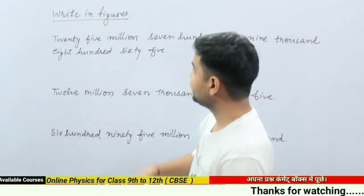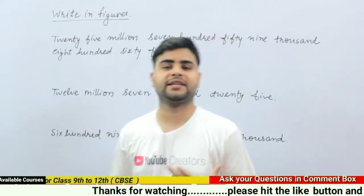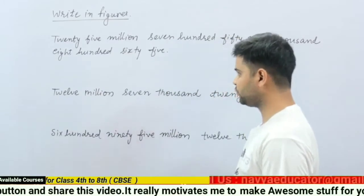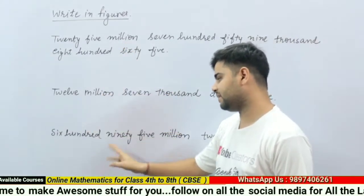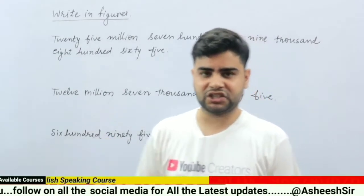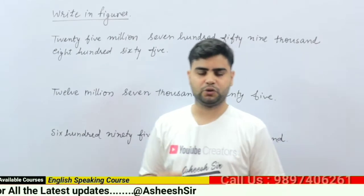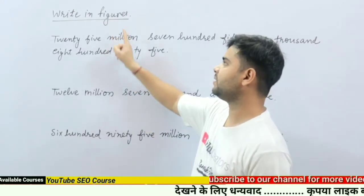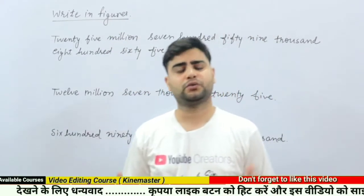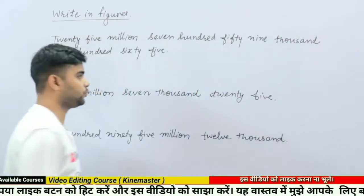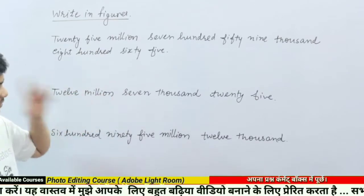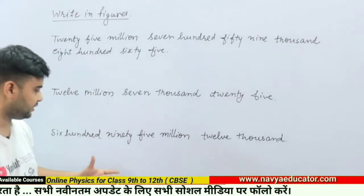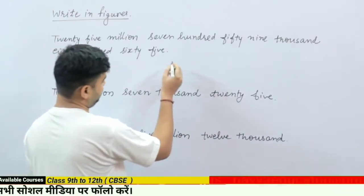Students, now we are going to write numbers in figures. Writing in figures is very easy if you know about the place value chart. The word 'million' is repeating here, and millions come in the international place value chart. So we have to use the international place value chart to write these numbers in figures. Figures means writing in digits like one, two, three, four. First of all, check which kind of system is given — here it is the international place value chart.